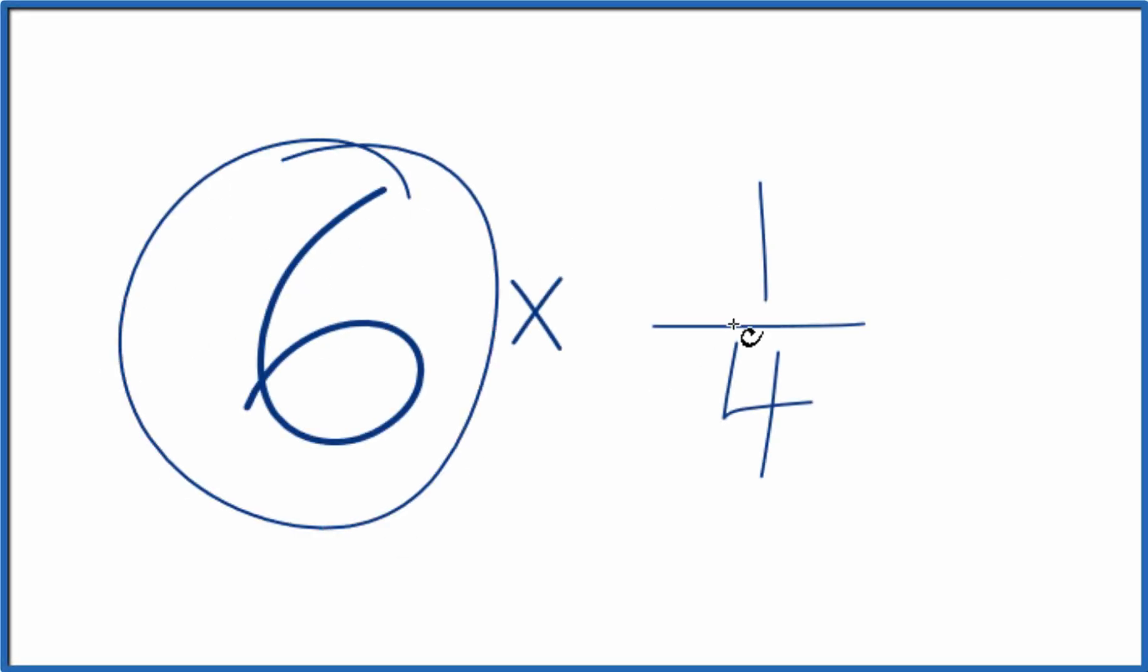Here's how you can multiply 6 times 1 fourth. So you could just add up 1 fourth 6 times. That would give you the answer to 6 times 1 fourth.